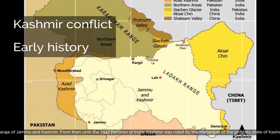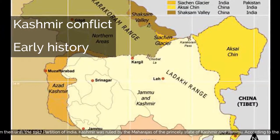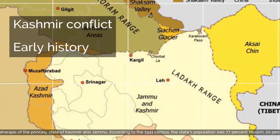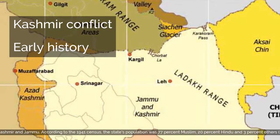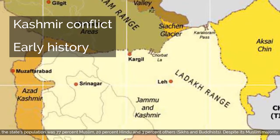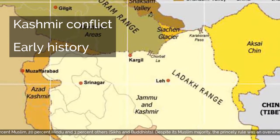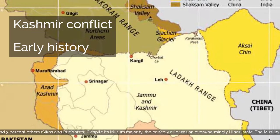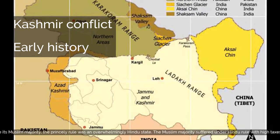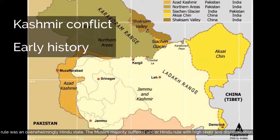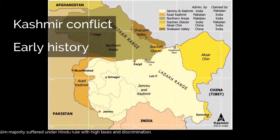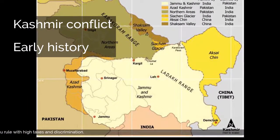From then until the 1947 partition of India, Kashmir was ruled by the Maharajas of the princely state of Kashmir and Jammu. According to the 1941 census, the state's population was 77% Muslim, 20% Hindu, and 3% others including Sikhs and Buddhists. Despite its Muslim majority, the princely rule was an overwhelmingly Hindu state. The Muslim majority suffered under Hindu rule with high taxes and discrimination.